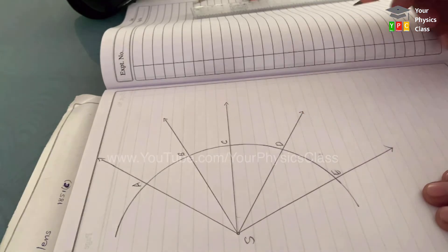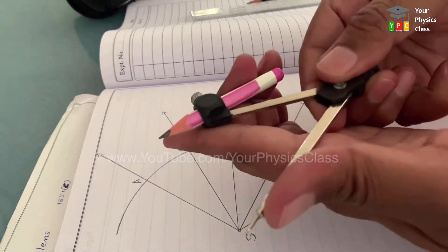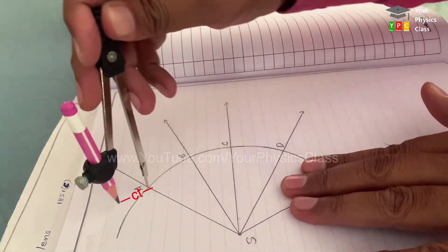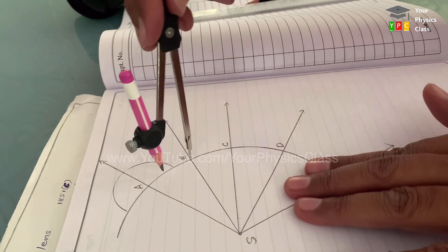Huygens' principle says these points will act as a secondary source of light and must emit light in all possible directions. But as you know, the backward light is cancelled due to destructive interference. Therefore, we will be drawing circles only in forward direction. Truly speaking, these are hemispheres. But in 2D, hemispheres are difficult to draw, so we draw semi-circles.